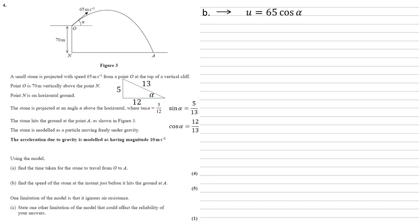Well, it's traveling at 65, but this time it's adjacent to the angle. So it's 65 cos alpha. We know cos alpha is 12 thirteenths. So multiplying them together gives us an initial velocity to the right horizontally of 60. Now because we're not dealing with any air resistance or anything like that here, that's going to be our final velocity as well. So when it hits the ground at A, it's going to have a horizontal velocity of 60 metres per second.